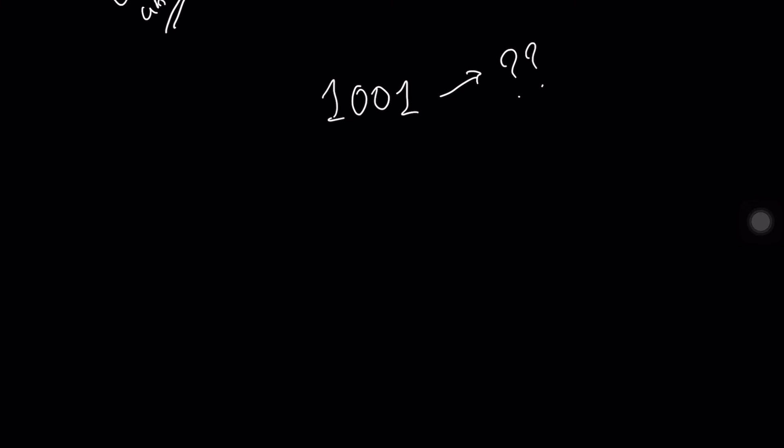Suppose we have a four-digit binary number: 1001. What does this actually mean in terms of human knowledge — how can we interpret what the computer is storing? Let's say the computer outputs or stores the value 1001 in a register. What does that value actually mean? Well, to convert this into a human-readable form, each binary digit has a base-two representation.